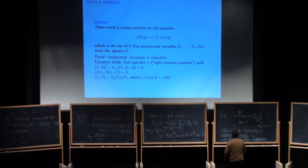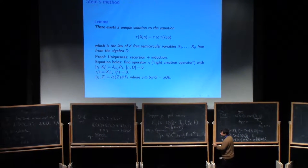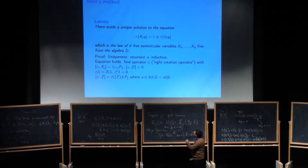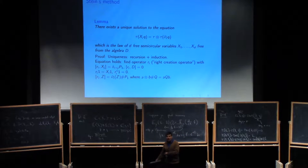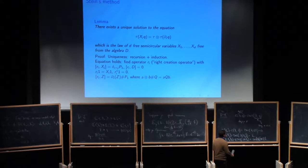What's left to do is to check that actually in the case that you have freeness, and that x_i are free semicircular variables, we do have this equation. And this is the trick that I already explained to you.